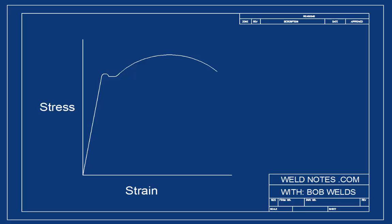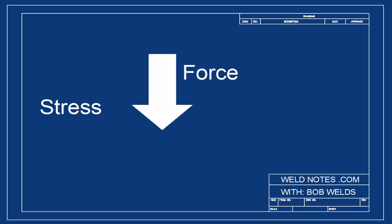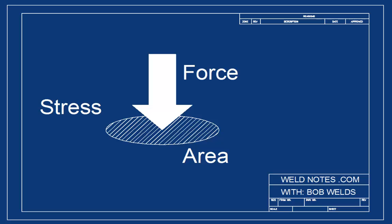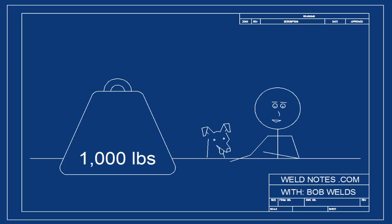But what is stress and what is strain? Stress is a force distributed across an area. Let's hang this 1,000 pound weight from a steel rod or two and we'll have a look at stress.